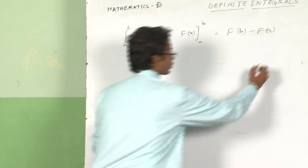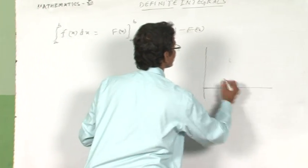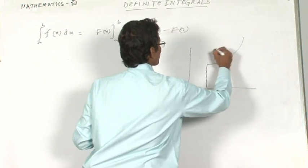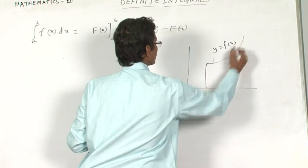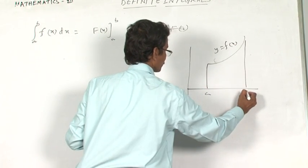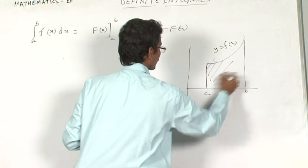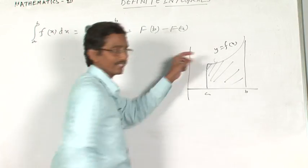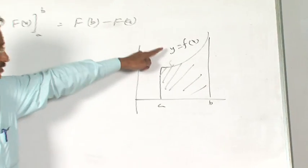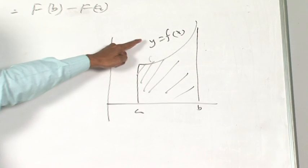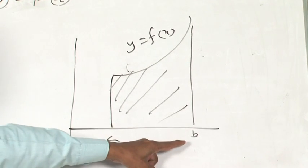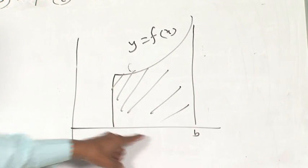I will show the diagram. Let y = f(x) be a curve, where a and b are limits. This represents the area of the region bounded by the curve y = f(x) with ordinates x = a and x = b along the x-axis.